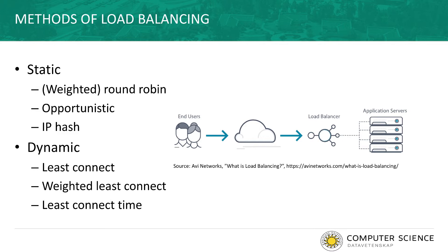There are many ways to carry out load balancing, each with advantages and disadvantages. Static load balancing does not take into account the previous states or behaviors of web servers while distributing the load, making it appropriate for systems with variations in load. A major drawback of static load balancing is that web requests cannot be migrated between web servers during their execution. Examples of common static load balancing algorithms include round robin, weighted round robin, opportunistic, and IP hash.